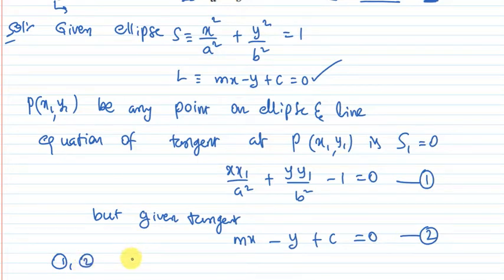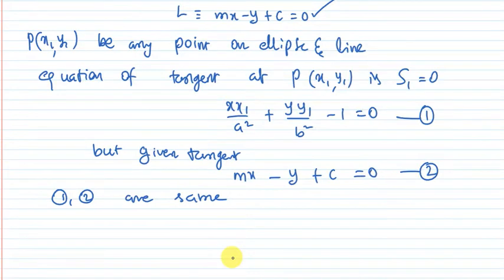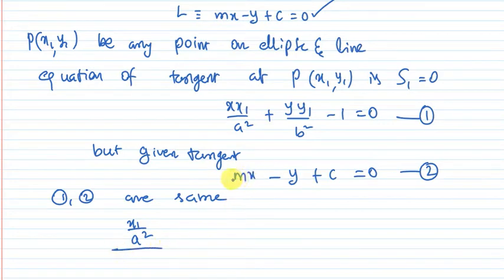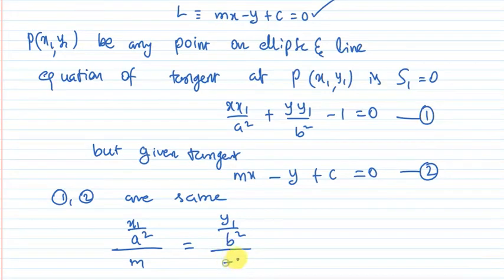Since both equations represent the same tangent at the same point, equations 1 and 2 are the same. Comparing coefficients using ratios: x1 by a squared divided by m equals y1 by b squared divided by minus one equals minus one divided by c.